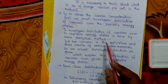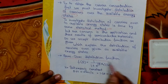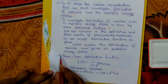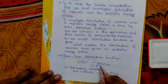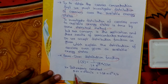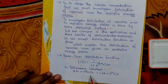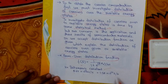From that method we find the distribution function which is known as the Fermi-Dirac distribution function, which can be written as: F(E) = 1 / (1 + e^((E − EF) / kT)), where k is the Boltzmann constant with a value of 8.62 × 10⁻⁵ eV/K or 1.38 × 10⁻²³ J/K.